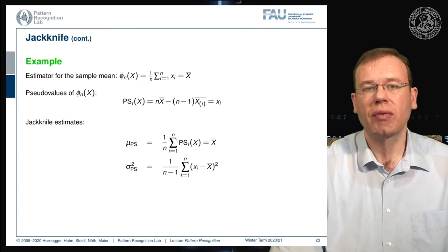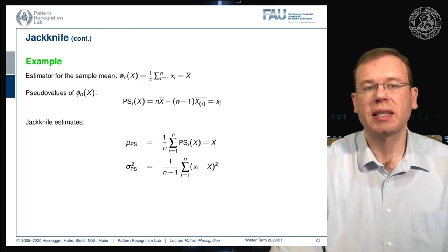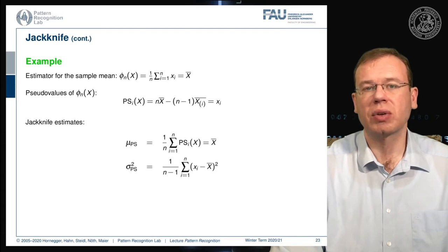If you have rather low sample numbers, then you generally have to estimate the variance higher than what you get from the typical maximum likelihood estimate.